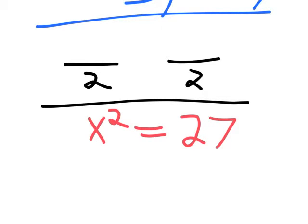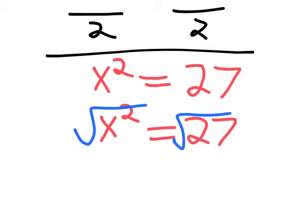x is still not by itself because it's x squared. In order to undo squaring something, you take the square root of both sides, but you cannot forget when you take the square root to cancel out a square, you've got to think of a positive and a negative solution. So we say positive or negative square root of 27.